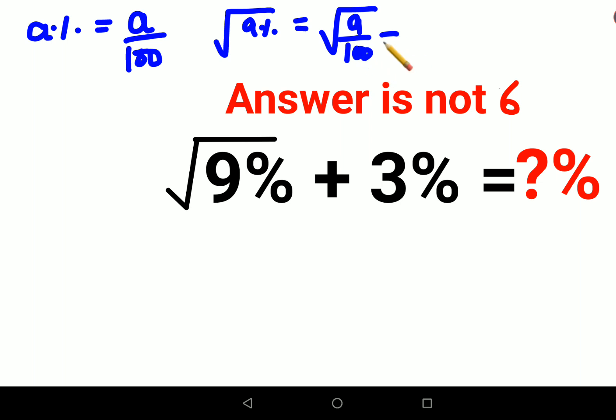Now let's split the roots. So we have root 9 upon root 100. So this comes out to be 3 upon 10, correct?